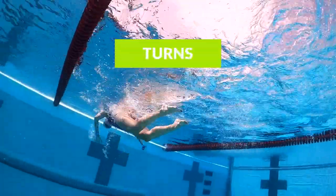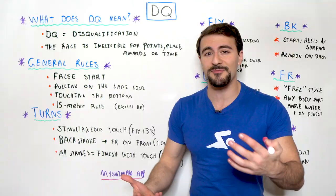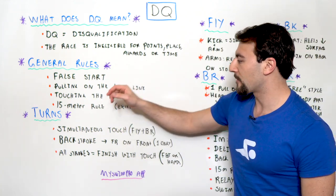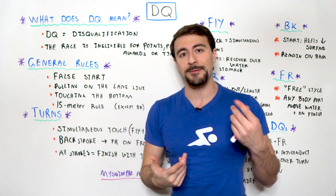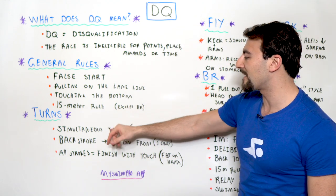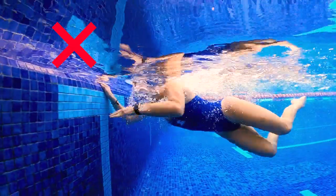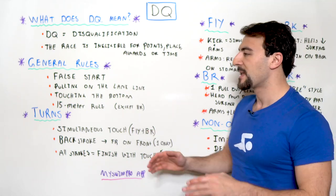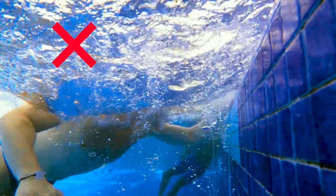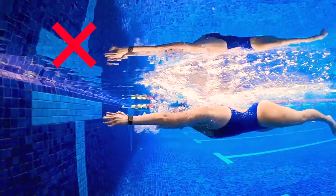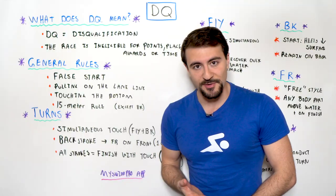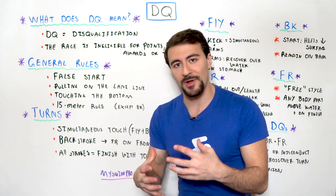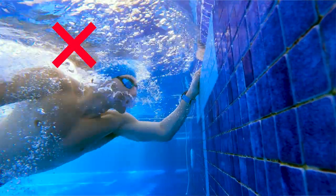Now let's talk about turns, which is often where disqualifications happen — and as an official myself, this is the most common place you'll see DQs. For butterfly and breaststroke, you'll often see a DQ for a non-simultaneous touch, meaning both hands must hit the wall at the exact same time. If one hand hits before the other approaching the wall in breaststroke or butterfly, that's an automatic disqualification, including in the individual medley.